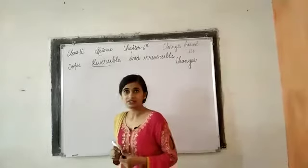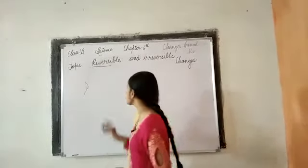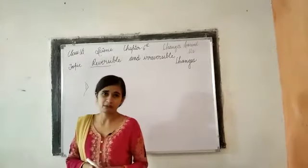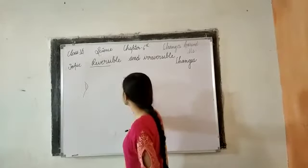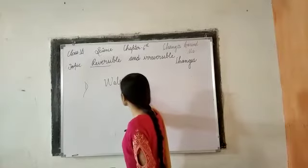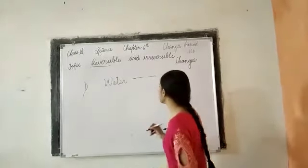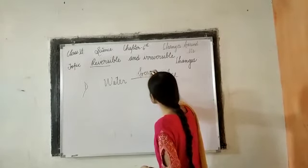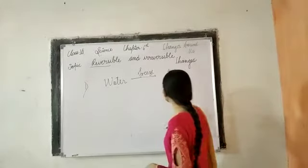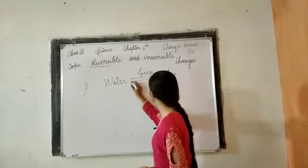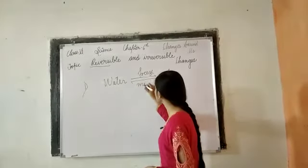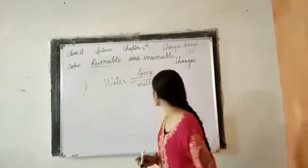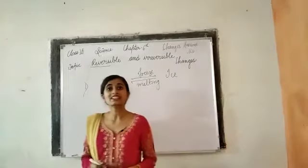When we talk about the reversible change, an example is the conversion of ice, water, and vapour — they are reversible changes. When we are going to freeze water, it will turn into ice. And again, after melting — take it out of the refrigerator — you will get the water back. This is called the reversible change.